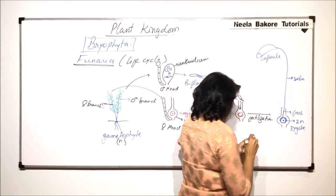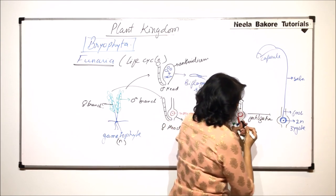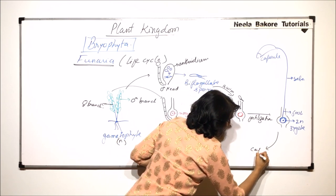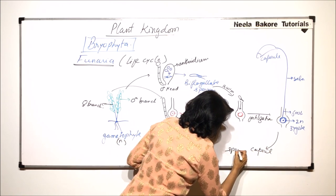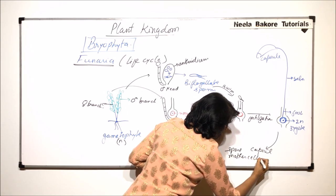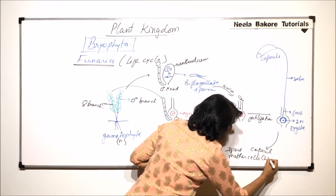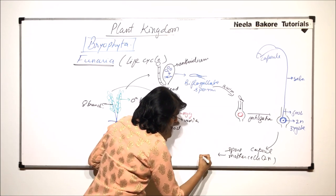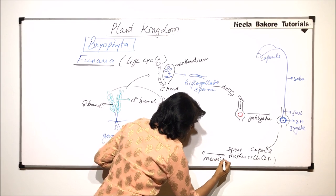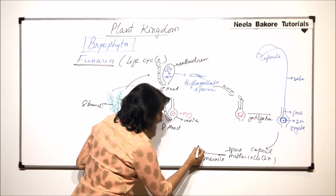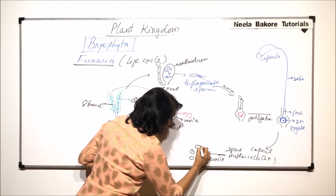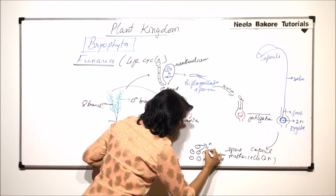So if I draw the arrow here from here, what is going to happen is from the capsule the spore mother cells, spore mother cells which are diploid, they undergo meiotic division. So here we can write that there is meiosis which is taking place. And this results in the formation of haploid spores.